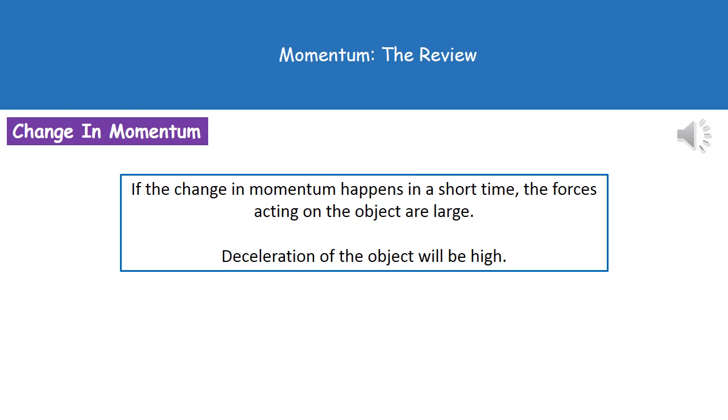Last thing to understand then is what does it actually mean? If we've got a change in momentum that happens in a very short space of time, what we're going to see is a very large force being generated on that object. And the way that that ties in in P3 for us is all to do with car crashes. So when we're looking at a change in momentum, i.e. when a car crashes, that's going to happen very quickly and obviously that can lead to large forces acting on the people in that car.